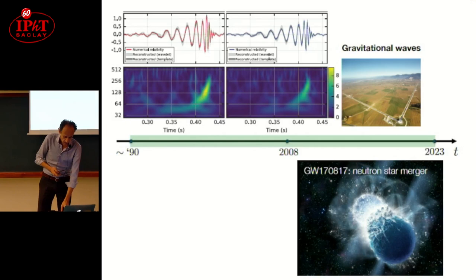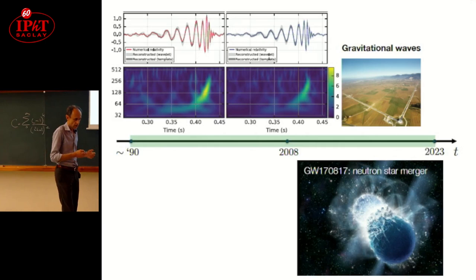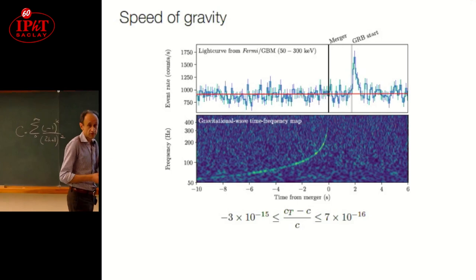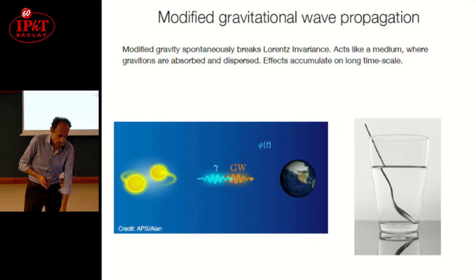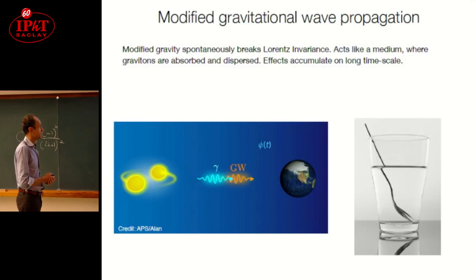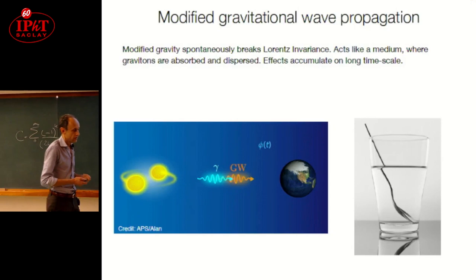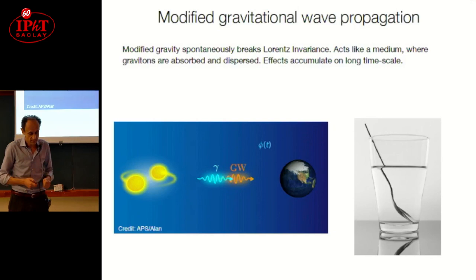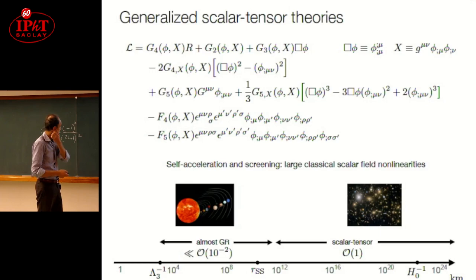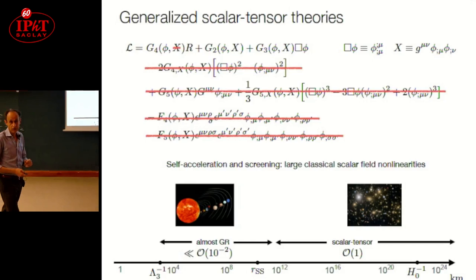This can be important for cosmology because it can be used to measure H0, the Hubble constant, but it was also important for another reason, because this type of constraint on the difference between the speed of light and the speed of gravitons can be used to rule out a lot of theories that were studied at the time. In general, modified gravity, spontaneous breaking of Lorentz invariance, acts like a sort of medium for gravitational waves. In many of these theories, gravitons are slower, for instance. These observations could rule out a lot of the parameter space, so it was extremely relevant.